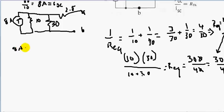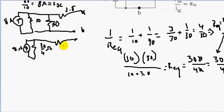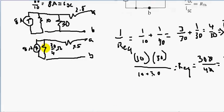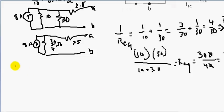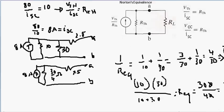So we have an 8 amp current source in parallel with a 30 over 4 ohm resistor, and in series with the 2.5 ohm resistor, between terminals A and B. Now let's use source transformation again, going from Norton's equivalent — current source in parallel with resistor — back to a Thevenin's equivalent — voltage source in series with resistor. We use the same equation: Ohm's law, V equals IR. V open circuit over I short circuit equals R Thevenin's.